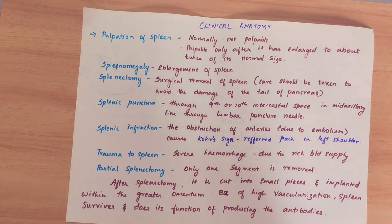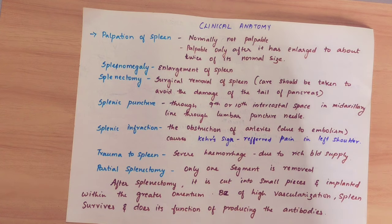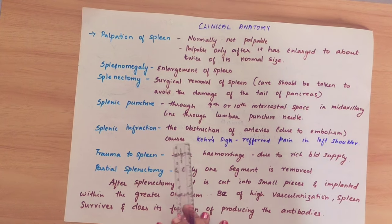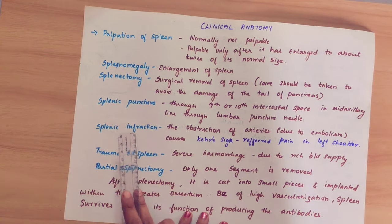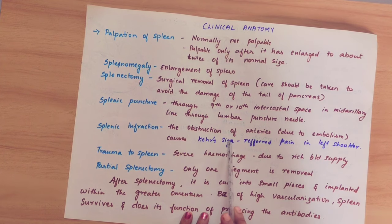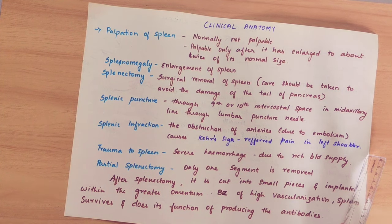Next is splenic infarction — infarction means cell death. When there is a blockage in an artery, this is called embolism, where a blood clot forms in a blood vessel (thrombosis). Splenic infarction presents with a sign called Kehr's sign, which is referred pain in the left shoulder.